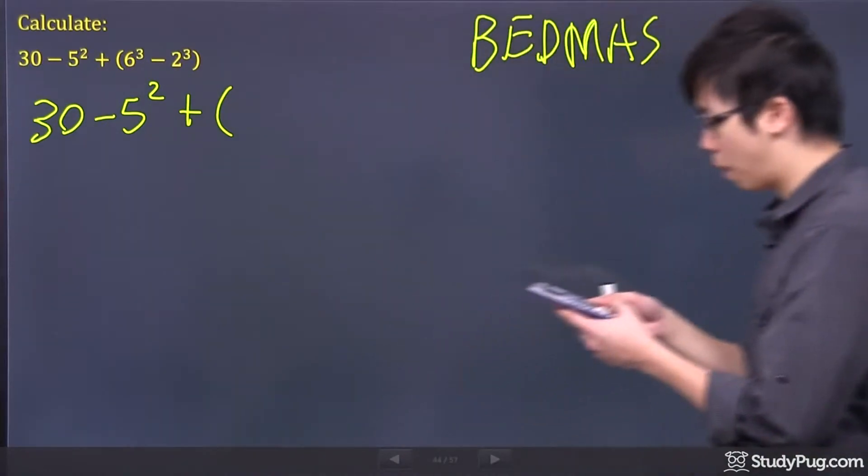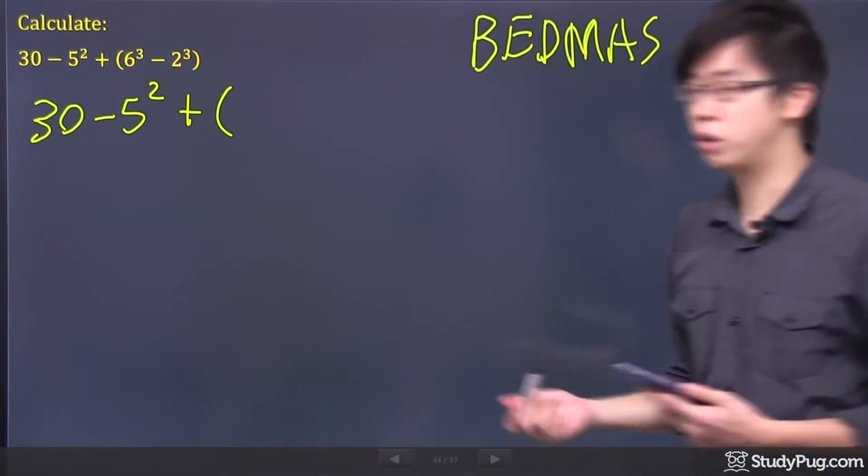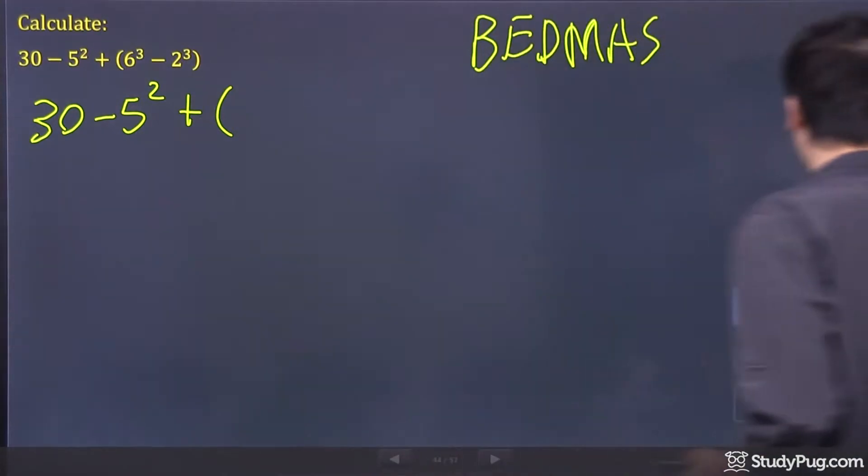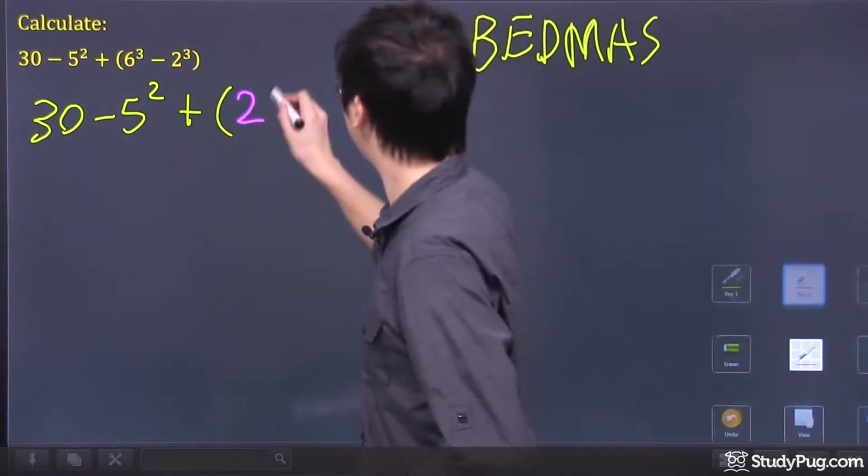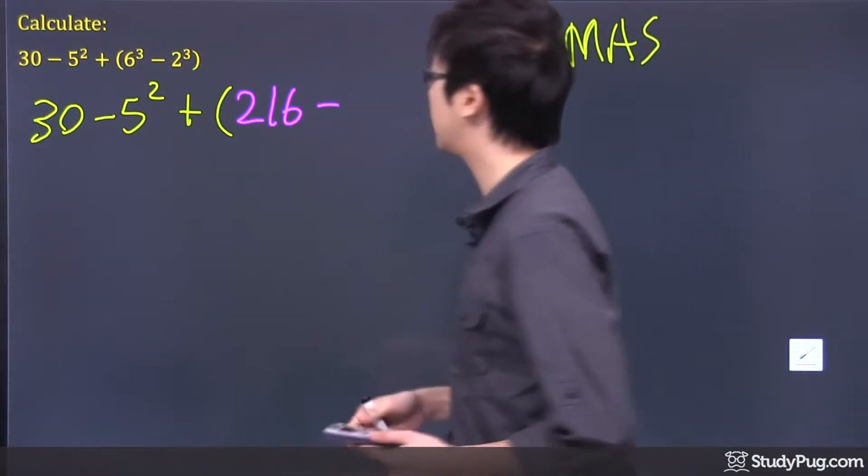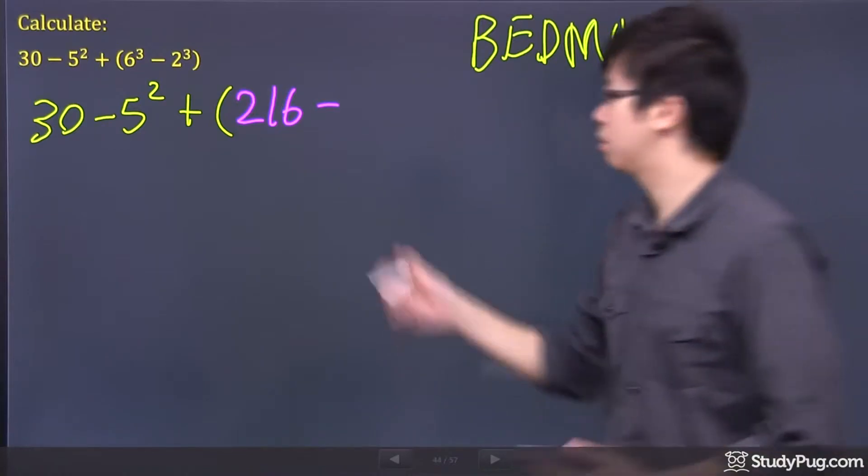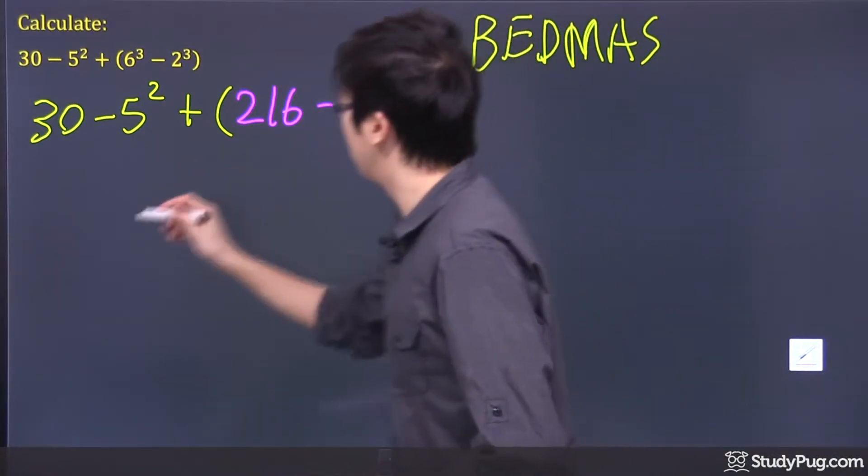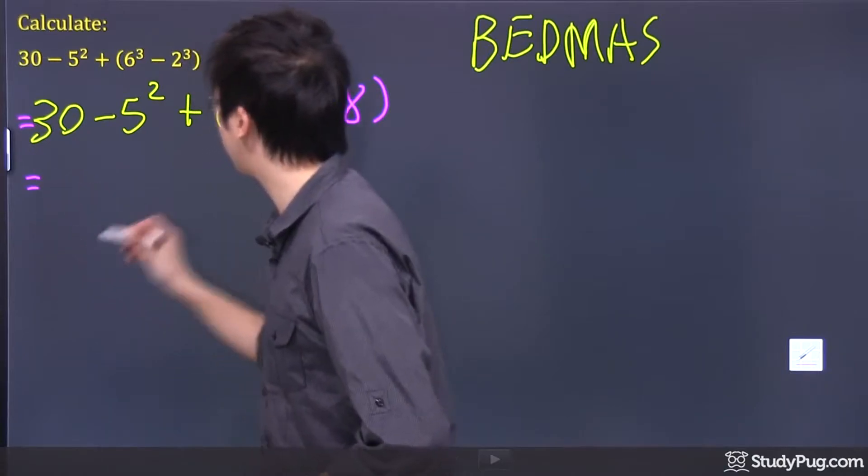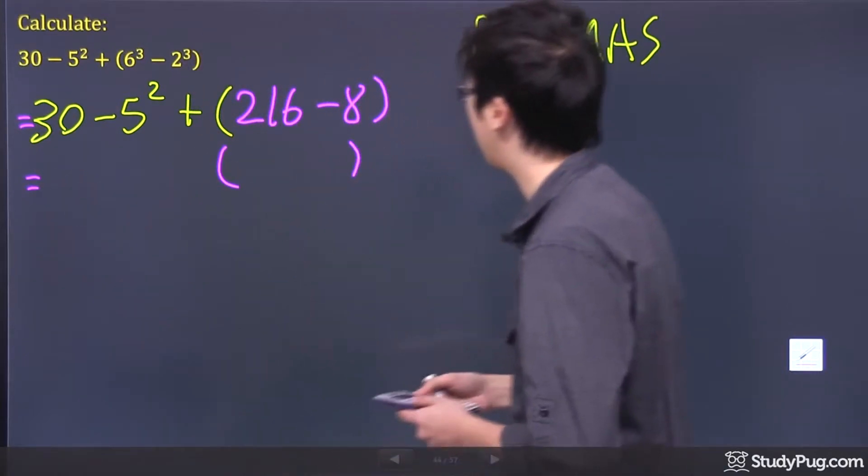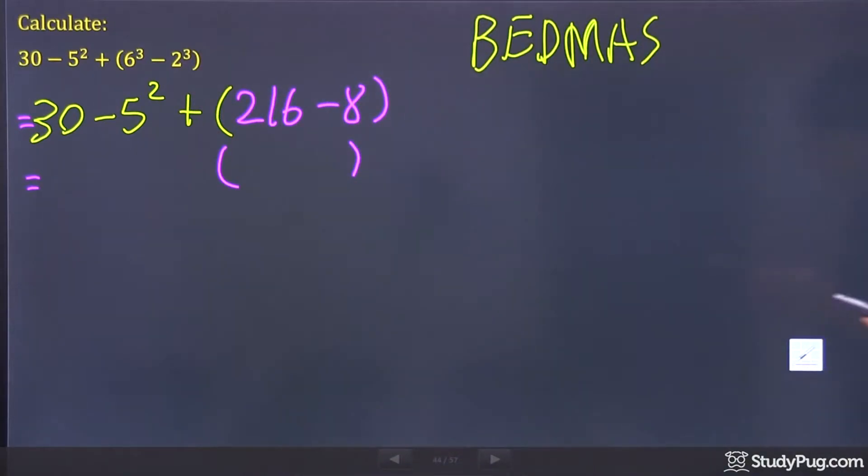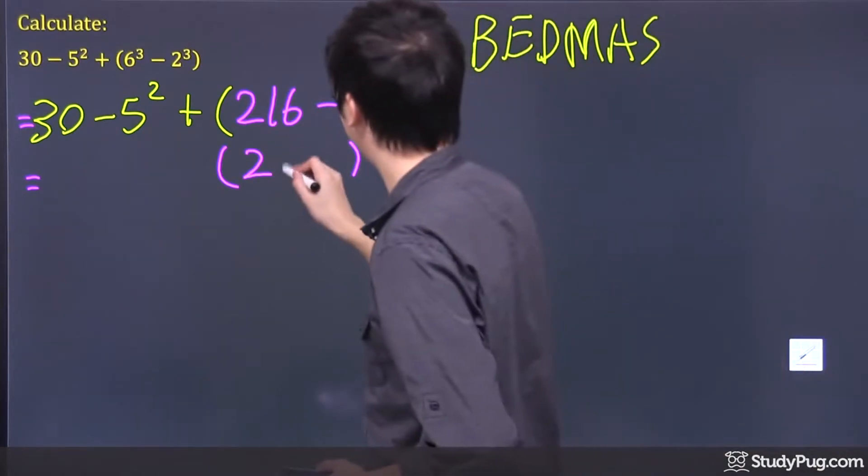So use your calculator, figure out what's 6 power 3. 6 power 3 is 216. So let's put down 216. So this is my first step. I'm going to change a little bit of color and subtract 2 to the power of 3. 2 to the power of 3 is 8. So there's your 8 right there. So after my first step, I got myself this bracket right here. 216 subtract 8, I got 208 right there.